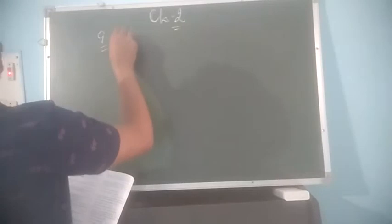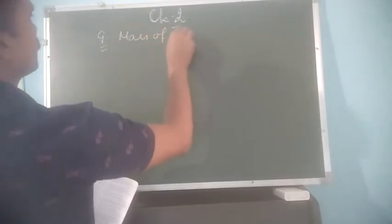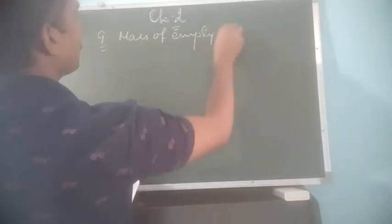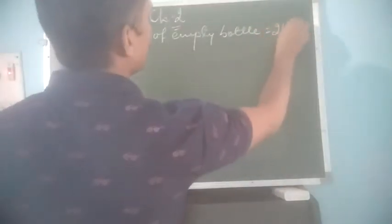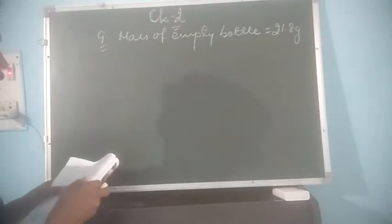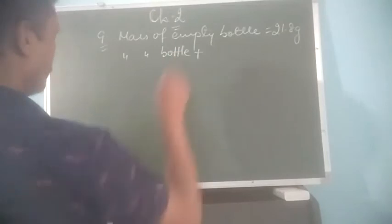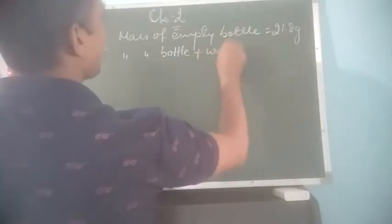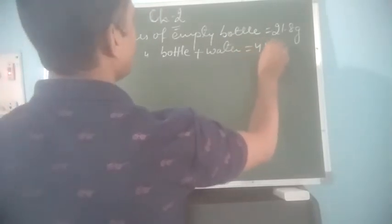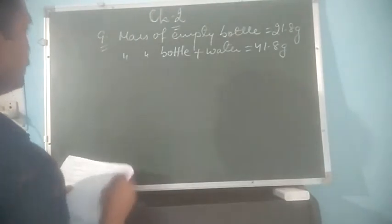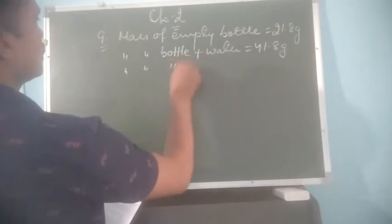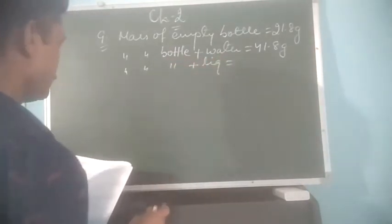Question number 9. Here mass of empty bottle is given as 21.8 gram. Then when this bottle is filled with water, its mass becomes 41.8 gram — that is, mass of bottle plus water is equal to 41.8 gram. And when it is filled with liquid, mass of bottle plus liquid is 40.6 gram.